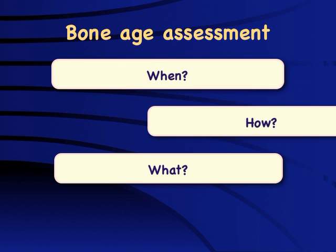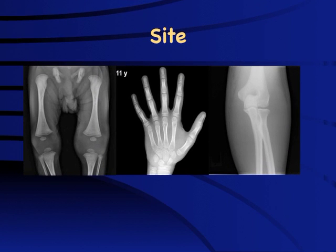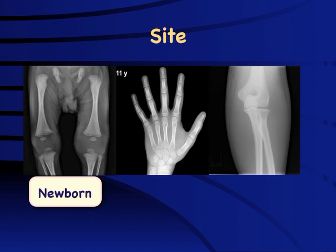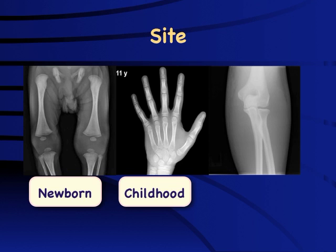How do we assess bone age? What we are trying to do is compare the maturation of bones against a population reference, so selecting an appropriate site is extremely important. The knee is a site used only for newborns, reserved for congenital hypothyroid children to assess any intrauterine effect of hypothyroidism — if there is no epiphysis at the lower end of the femur or upper end of the tibia, it indicates significant intrauterine thyroid deficiency. For most clinical practice, it is the non-dominant wrist and hand — often called the left wrist and hand — which is considered significant.